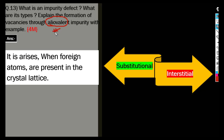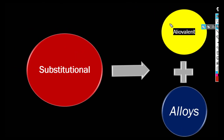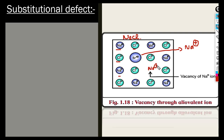Next, explain the formation of a vacancy through aliovalent impurity. The aliovalent defect comes under substitutional type — it is a type of substitutional defect. You are being asked specifically about aliovalent impurity, not about alloys. So you need to draw the diagram for this substitutional defect.